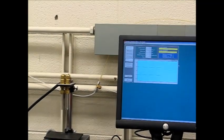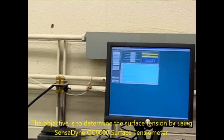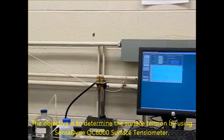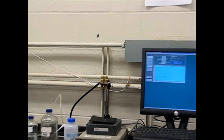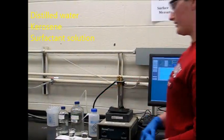such as dynes per centimeter. The objective in Lab 5 is to determine surface tension using the Sensodyne surface tensometer. The equipment we're using today is the tensometer, distilled water, kerosene, and surfactant.